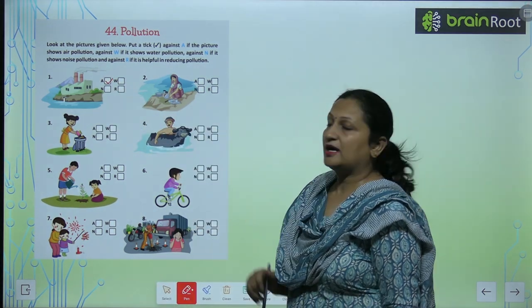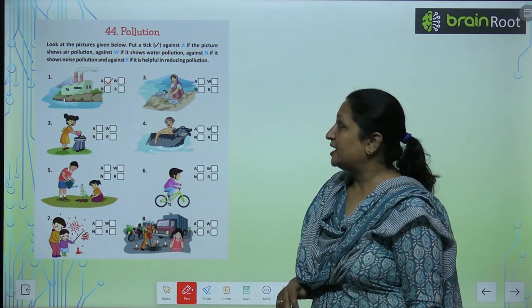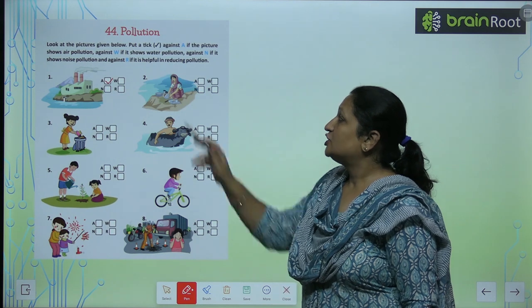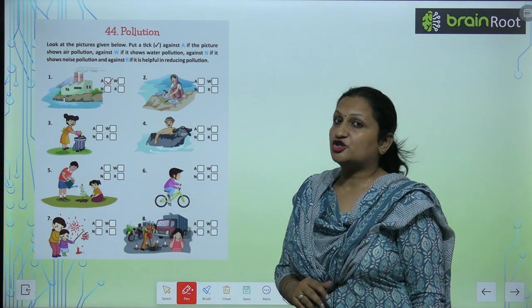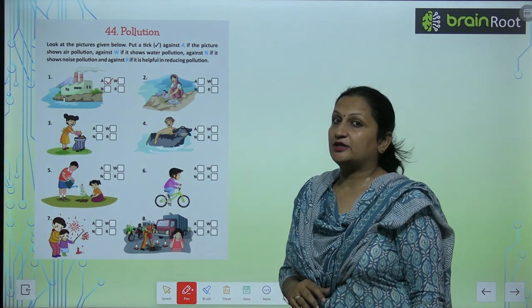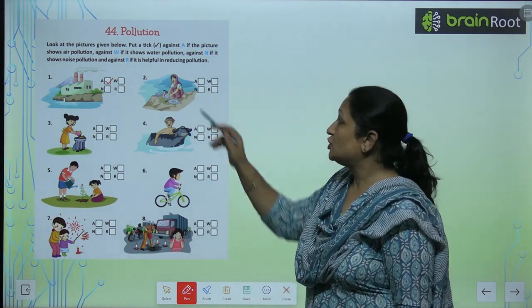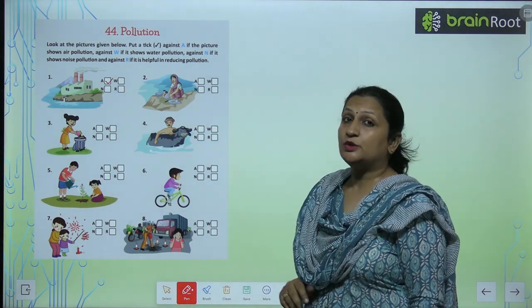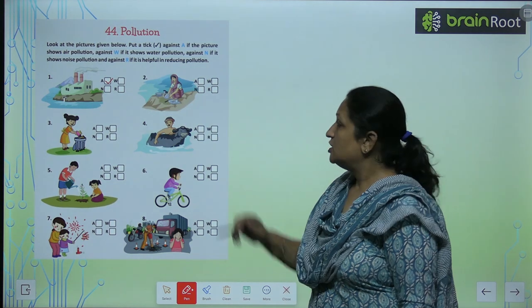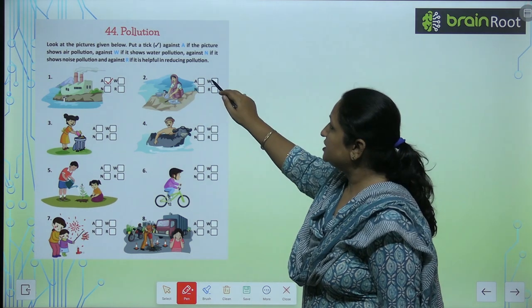See the second picture. Here a lady is washing utensils in the river, so she is polluting the water. So you mark here W.